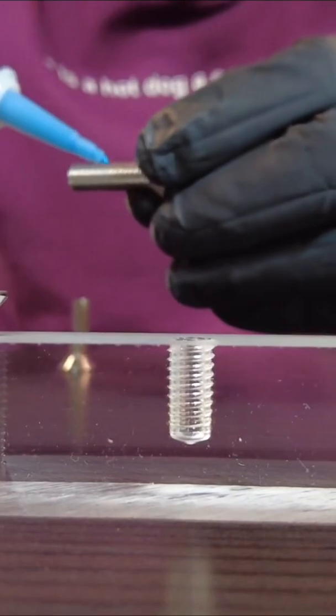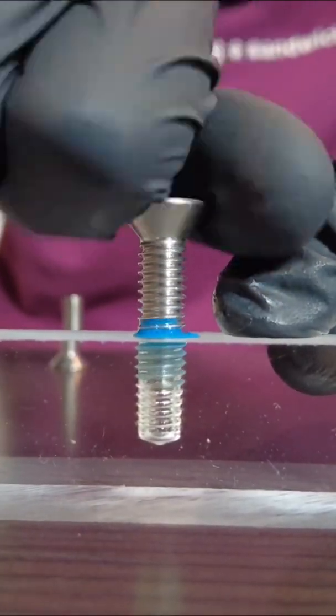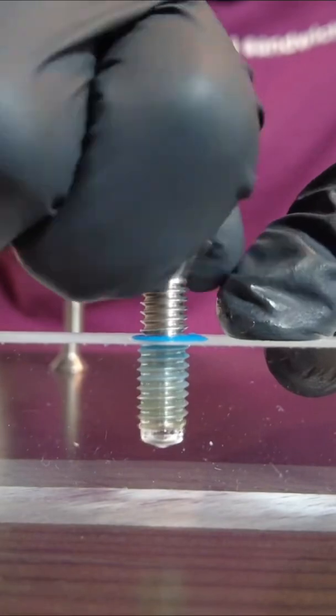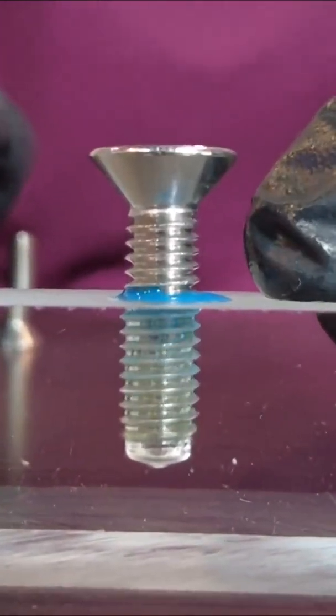But look what happens when we do this in a blind hole. As you screw in the bolt, it forces the trapped air upwards through the threads, preventing the thread locker from migrating downwards.